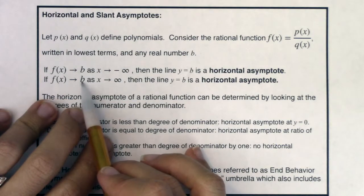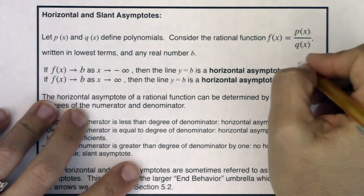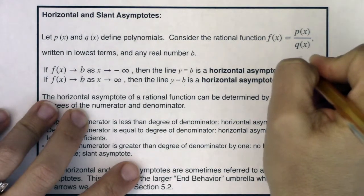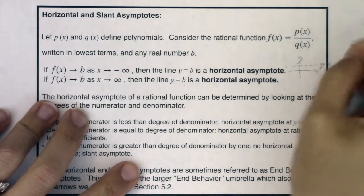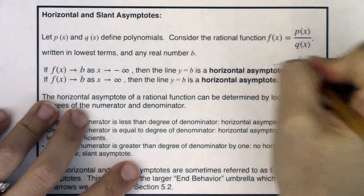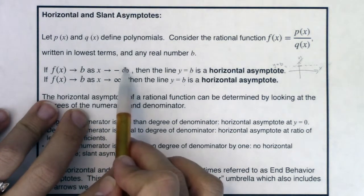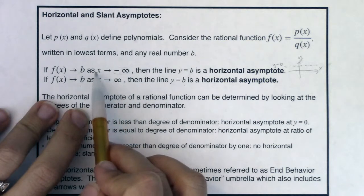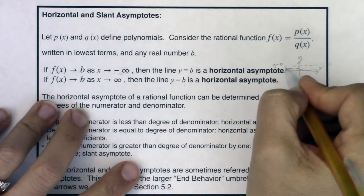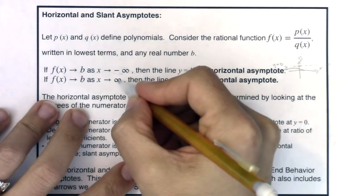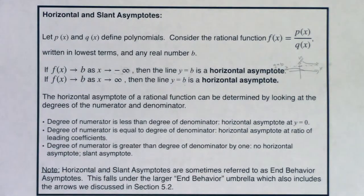And if your function heads to b, some real number b, as x goes to positive infinity, then y equals b is also a horizontal asymptote. Let me draw a nice little function. Let's put b right here with a line — this is y equals b. Now I want us to think about what it means as x goes to negative infinity and x goes to positive infinity. If it's negative infinity, we're specifically talking about left. So as I head left, my function is going towards some horizontal line. Or as x goes to positive infinity — going right — my equation is going towards some line. When that's the case, we've got horizontal asymptotes.